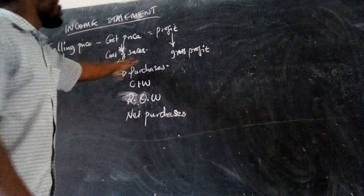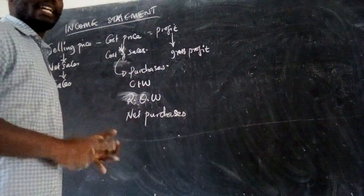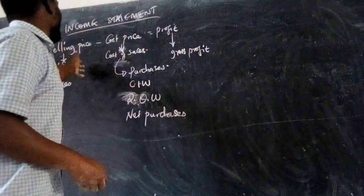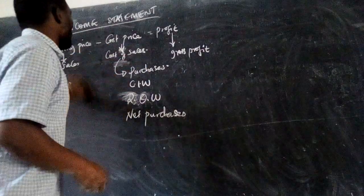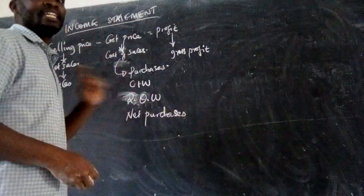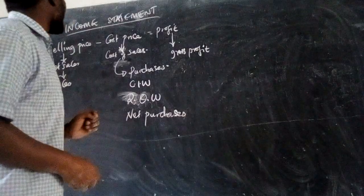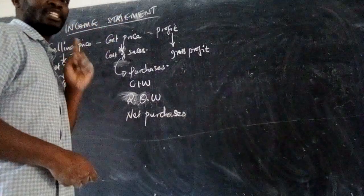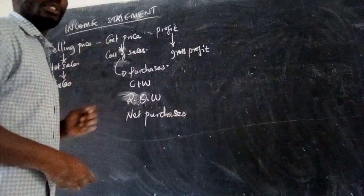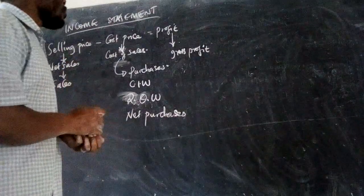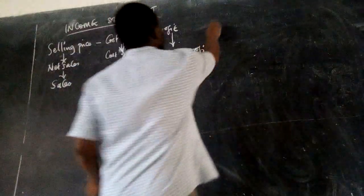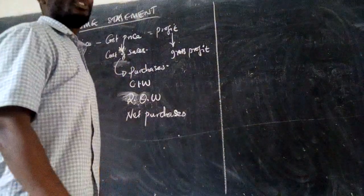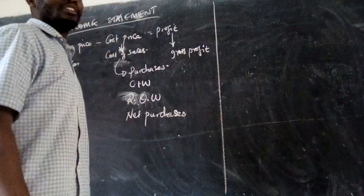So we have two formats: we have the T-format and the vertical format. In case you are told to prepare — this information is what is prepared in the trading account. But we are focusing on the income statement, which combines the trading profit and loss account drawn in one format. We want to see how we put this information in the trading profit and loss account.